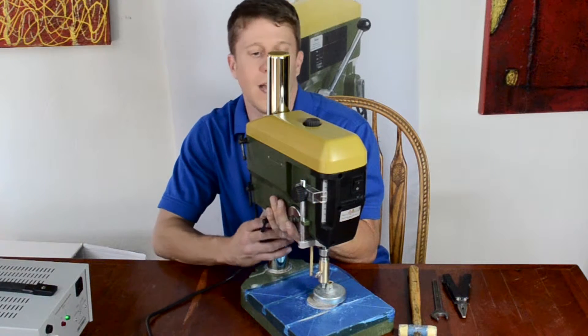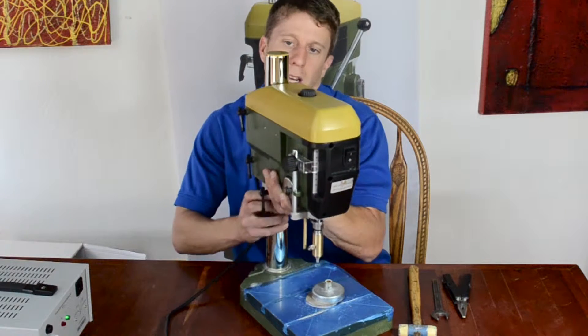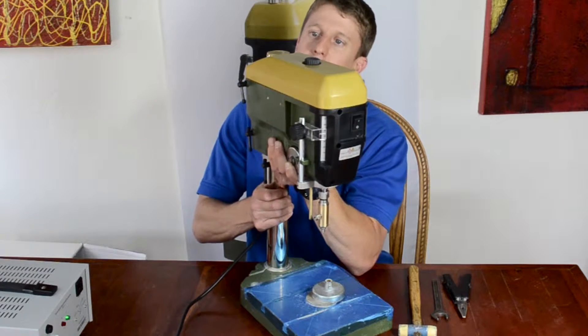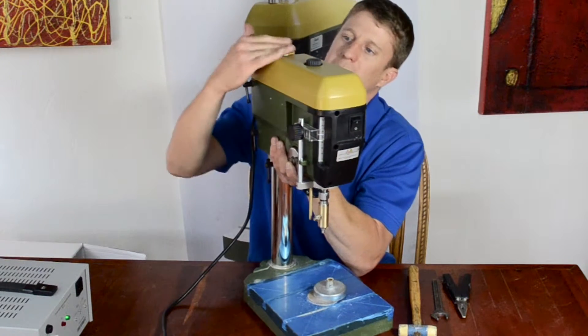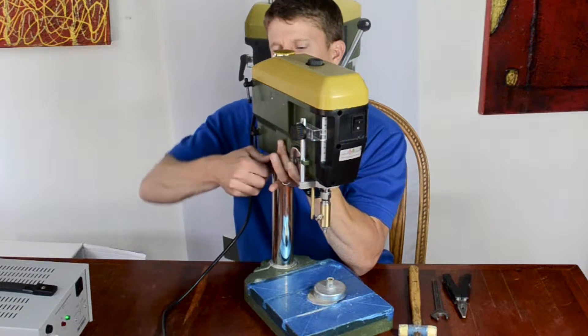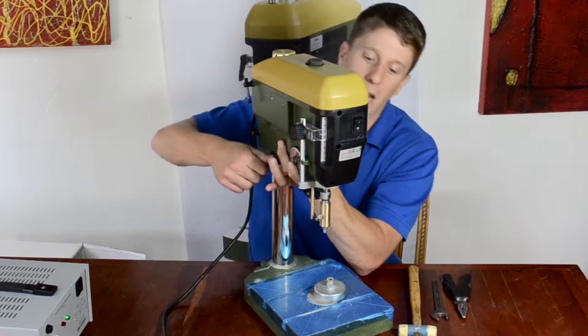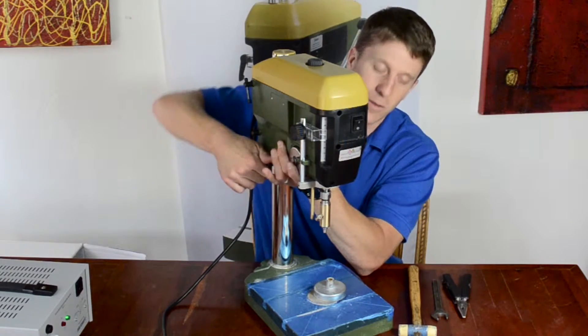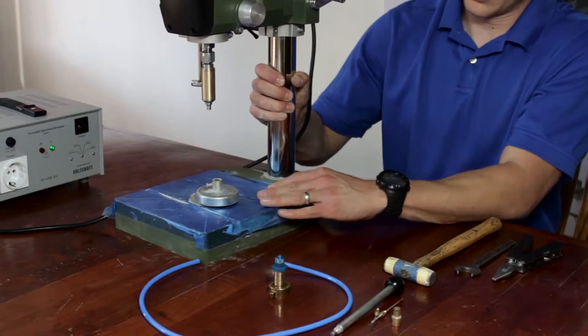Always do the bottom one last. Just loosen it and raise it up towards the top, make it kind of flush up there, and then just tighten the bottom one. You don't need to tighten all three right now, just tighten the bottom one. This just gives you some working space.